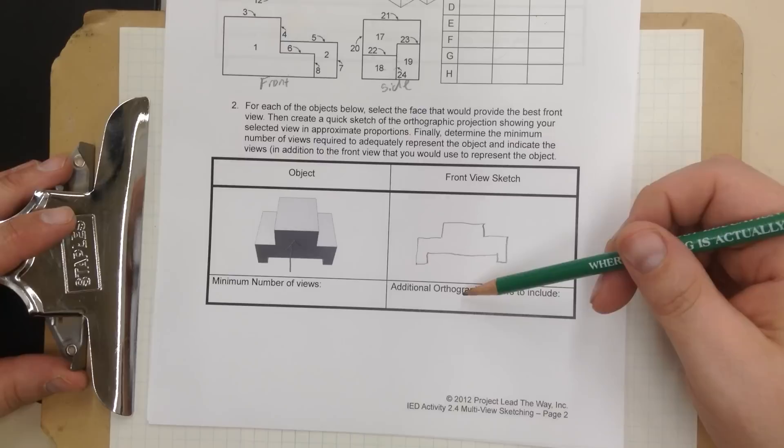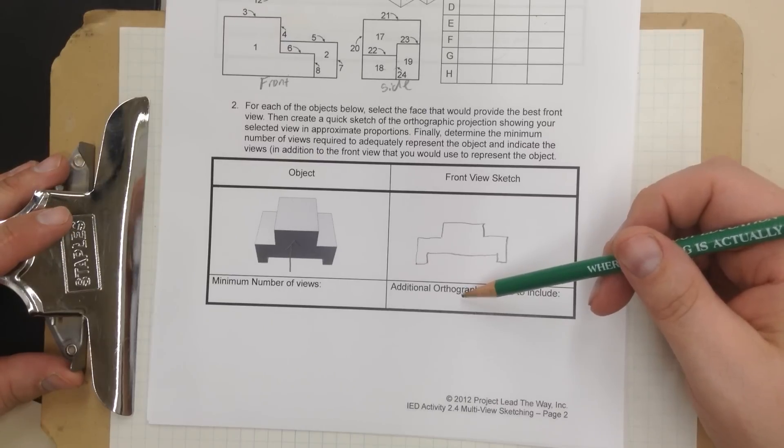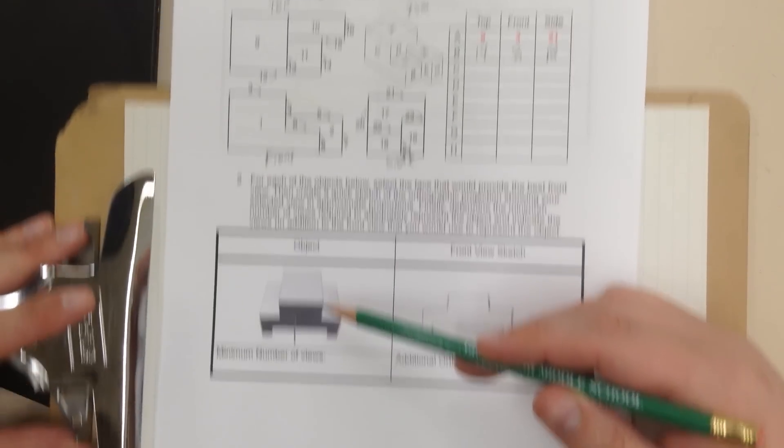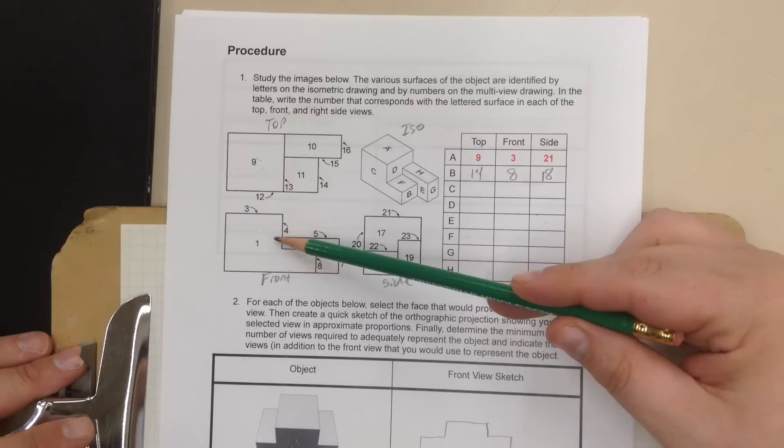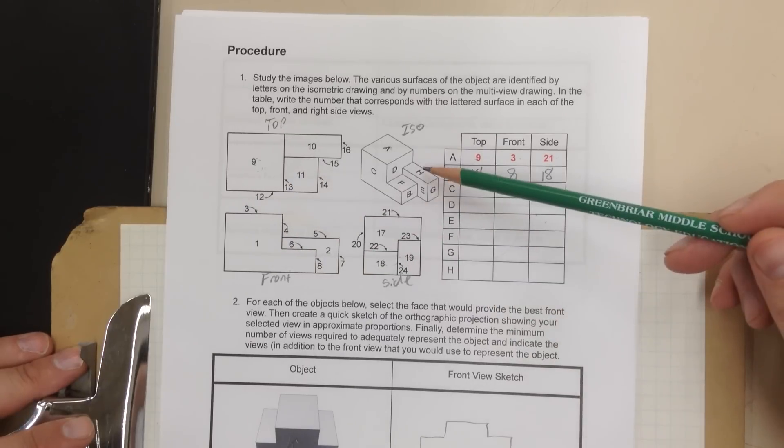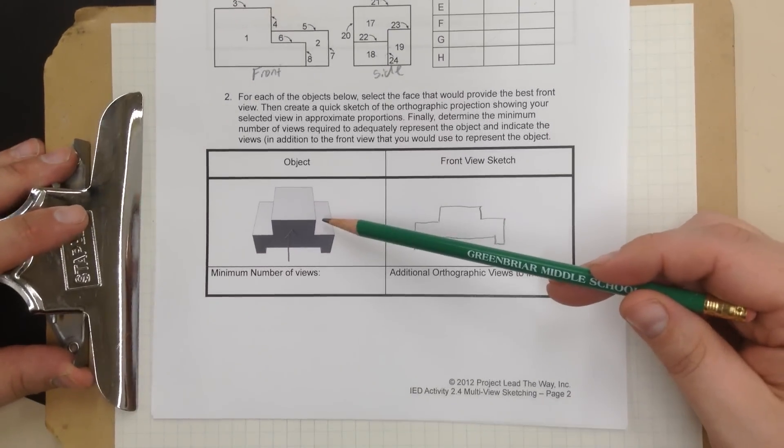Now it asks you about additional orthographic views to include. This is kind of a complex shape. And remember, the orthographic views are front, top, side, ISO. We've got an ISO in this one already.